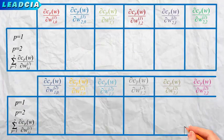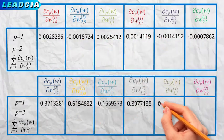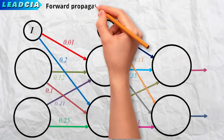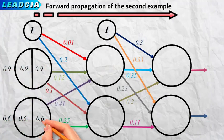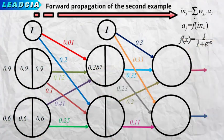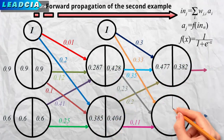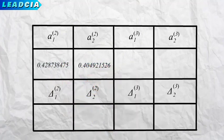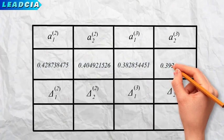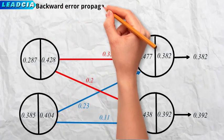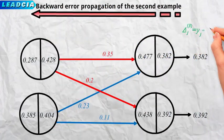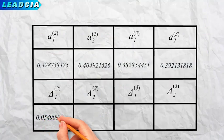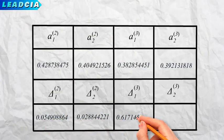Now it is the time for the second example of our learning database to be propagated through our network from the input layer to the output layer. By applying the formulas to calculate the ins and a's, we will obtain the following values. A new table will be drawn up to record the a's and deltas in order to calculate the stochastic gradient with respect to each omega. A backward propagation of the error committed by the second example is applied to compute the deltas at the level of the output and hidden neurons, without considering the bias. The calculated deltas will be saved in the same table with the a's.